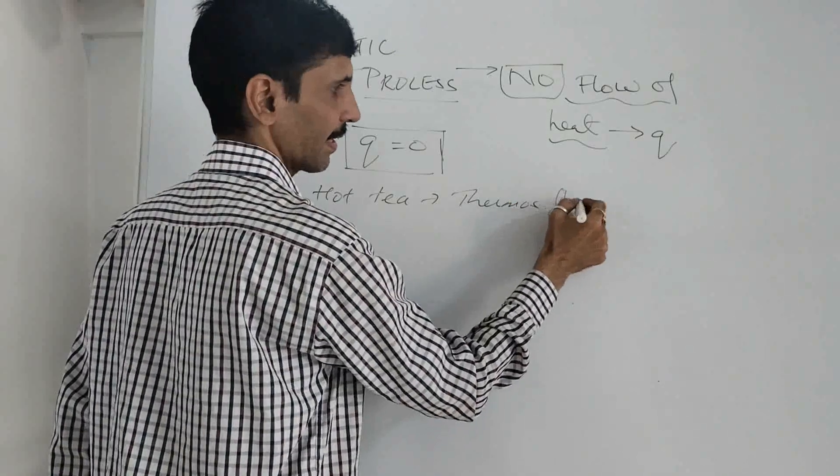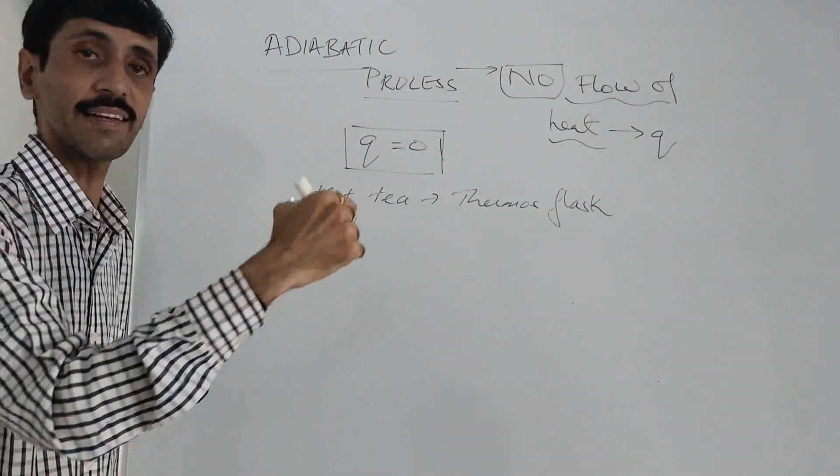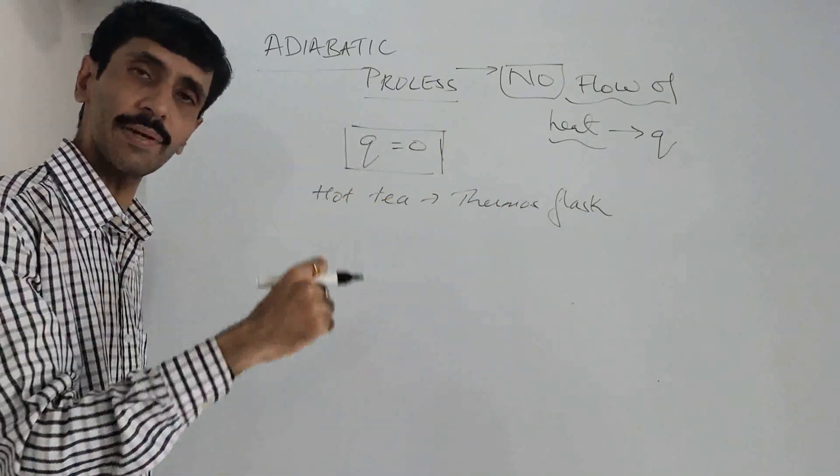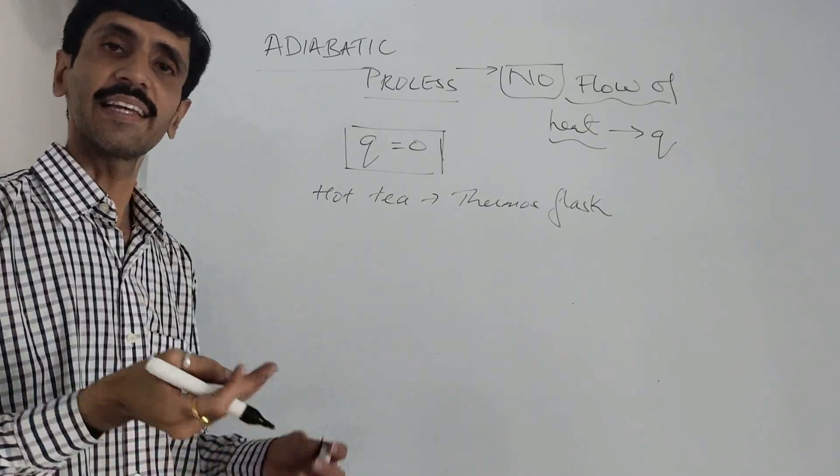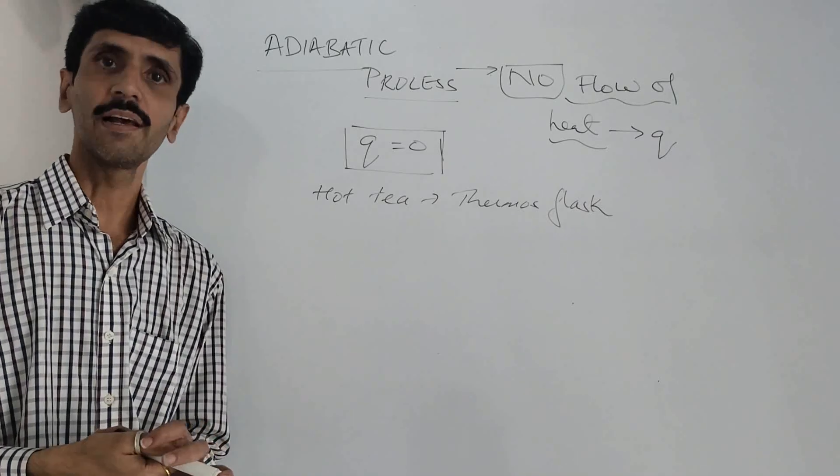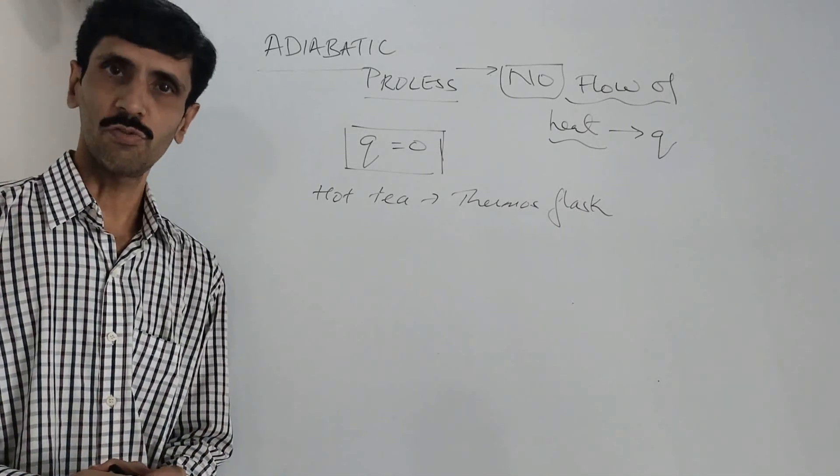Thermos flask, when we talk about the thermos flask, the heat inside doesn't escape the thermos flask. At the same time, the outside heat doesn't come inside the thermos flask. And hence, we say that there is no flow of heat and therefore, this becomes the best example for adiabatic process. I hope you have understood this very well.